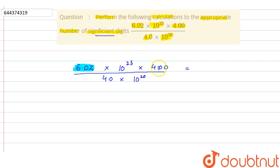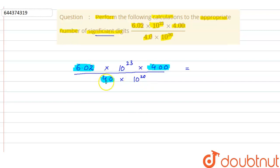In 4.00 there are three significant digits, because zeros after a non-zero digit are significant. In 4.0 we have two significant digits — four and zero. The exponents 10²³ and 10²⁰ are not considered in significant digits. So the least number of significant digits we are getting here is two: in 6.02 we have three, in 4.00 we have three, and in 4.0 we have two.